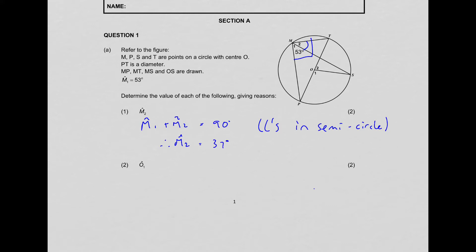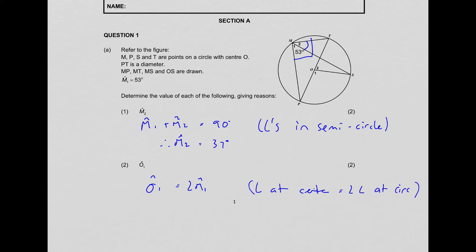Question two, O1 is the angle at the center. O1 is subtended by arc PS, and M1 is also subtended by arc PS. So that means O1 needs to be double M1. So O1 is equal to twice M1, and the reason is: angle at center is twice the angle at circumference. We know M1 is 53 degrees, so angle O1, which is twice 53, must be 106 degrees.